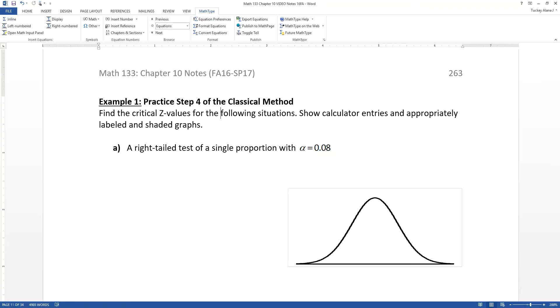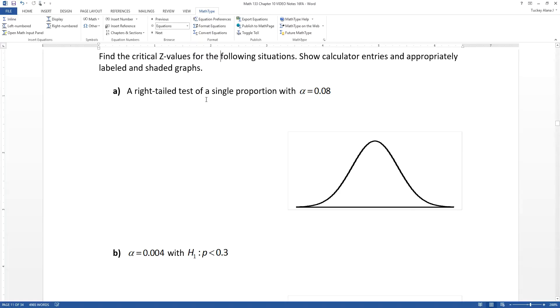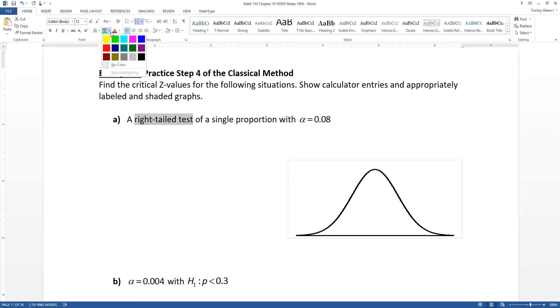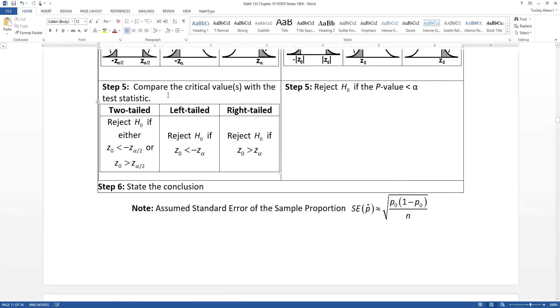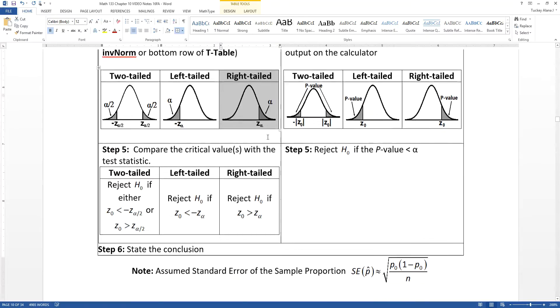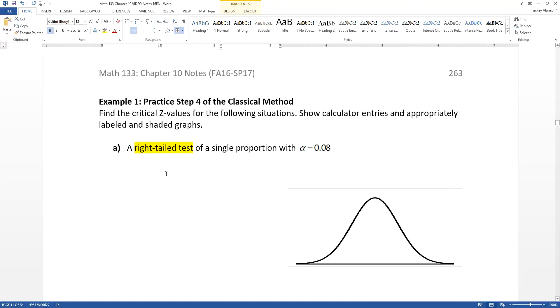So we're going to start off with finding the critical Z value for a right-tailed test for a single proportion with alpha equal to 0.08. Now that right-tailed test, that's kind of important. That lets us know which of the three pictures we're going to be looking at. So when you look back at step four, you have to choose which of the three drawings is the drawing you're going to go with. Since it's right-tailed, we know this is the drawing. So we're going to put down a line, we're going to shade our tail to be alpha, and alpha is 0.08. So you want to shade about 8% of your tail, and then we want to find that value.